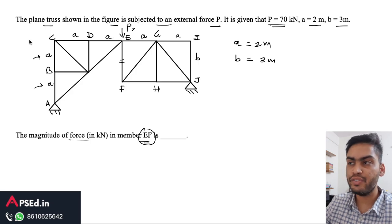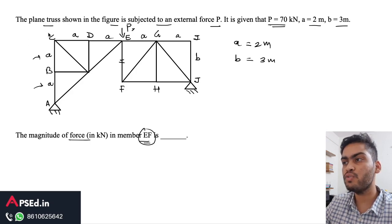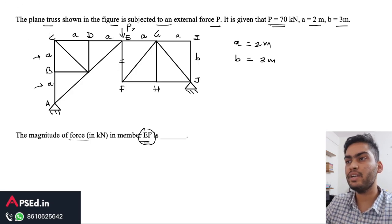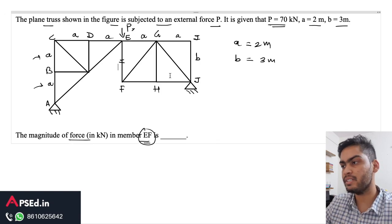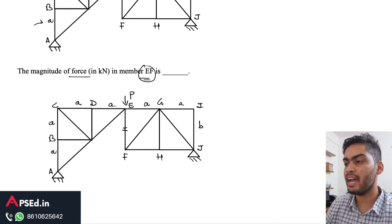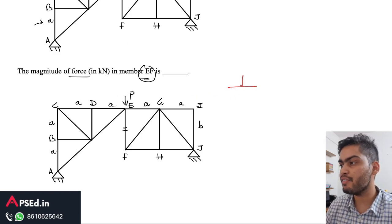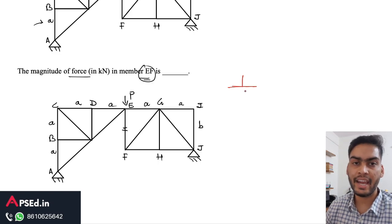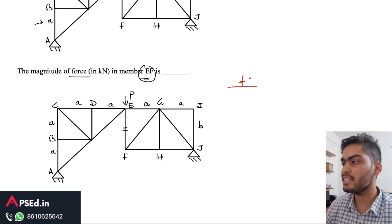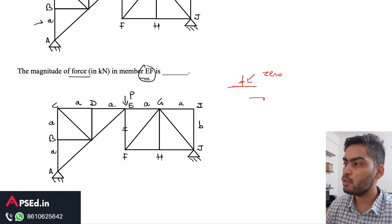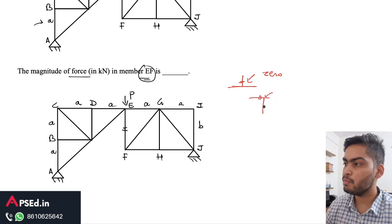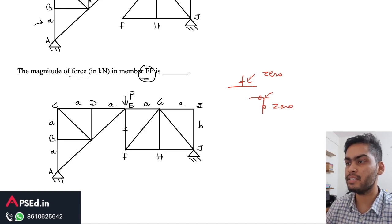In a truss, there can be zero force members. There are two basic rules: first, if we have two collinear members and a third member is perpendicular to them, that third member is a zero force member. Second, if we have two perpendicular members at a joint with no external force applied, both members are zero force members.